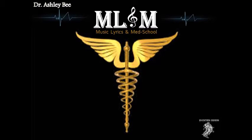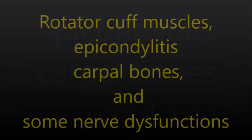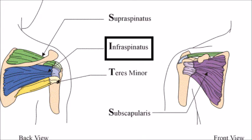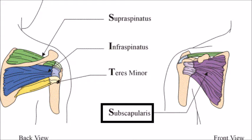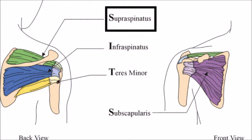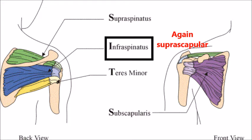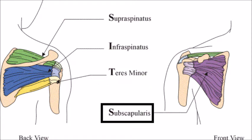Rotator cuff — SITS mnemonic: S is Supraspinatus, I is Infraspinatus, T is Teres Minor, S is Subscapularis. Supraspinatus is innervated by the suprascapular nerve. Infraspinatus — again, suprascapular nerve. Teres Minor — axillary nerve. Subscapularis — suprascapular nerve.